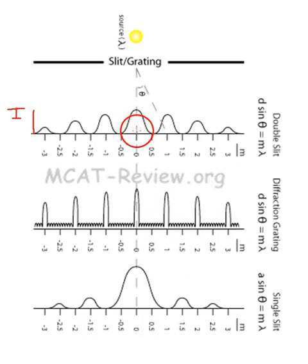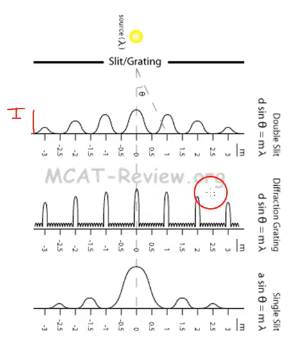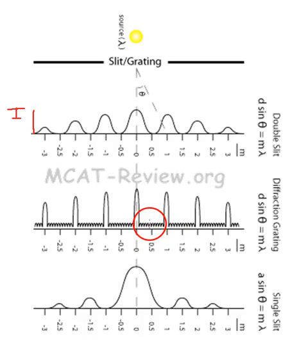Notice the main difference between the double slit and the multiple slit grating: with the double slit it gradually gets dimmer and then gradually gets brighter, whereas with the grating it peaks sharply and then drops down — most of it is darkness, then it gets bright, then dark again. All these little features represent destructive interference. Because there are so many slits, you get so much destructive interference, which is why most of it is dark. So this one gives very clearly defined fringes, while the double slit gives more gradual fringes.